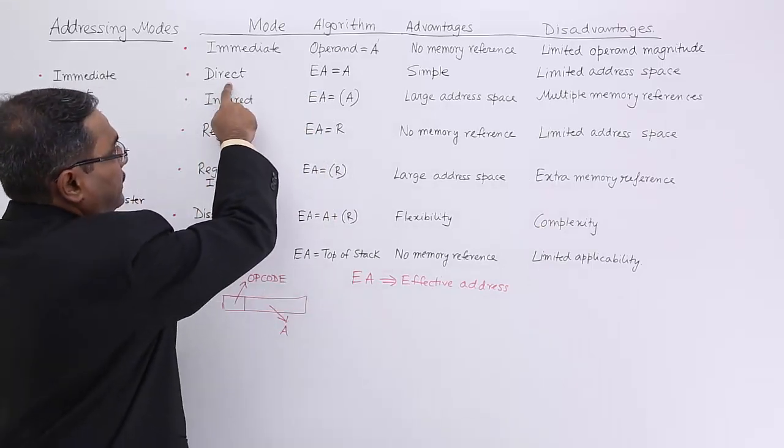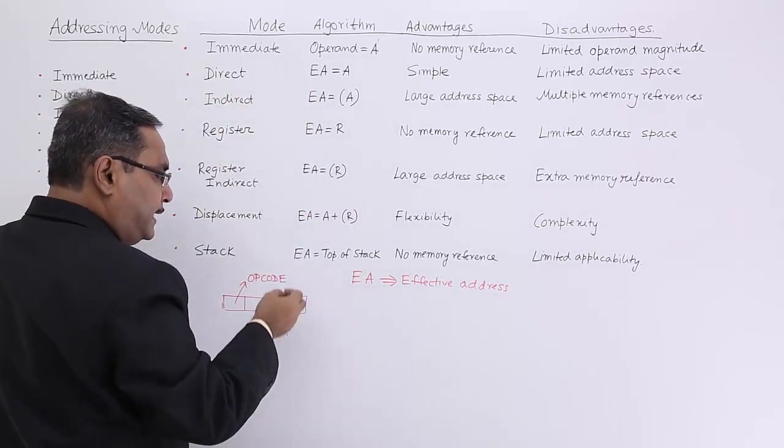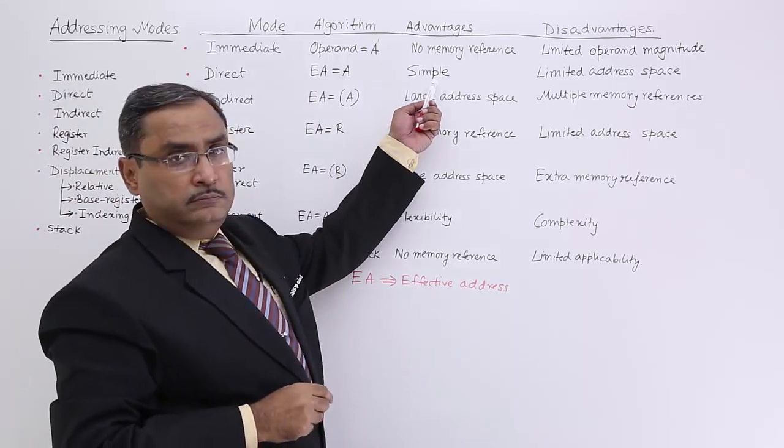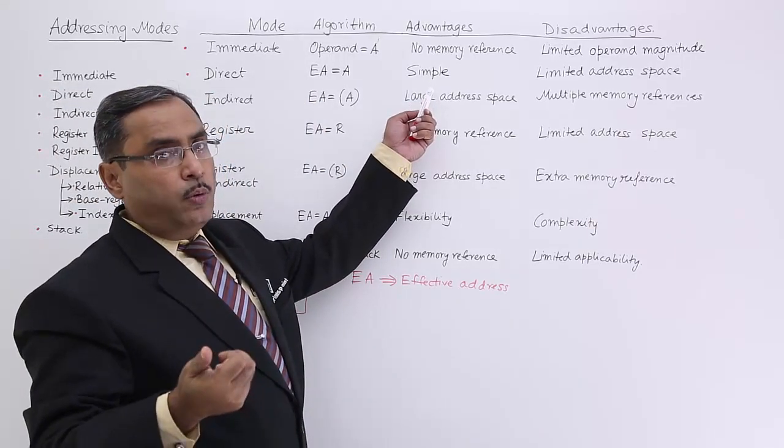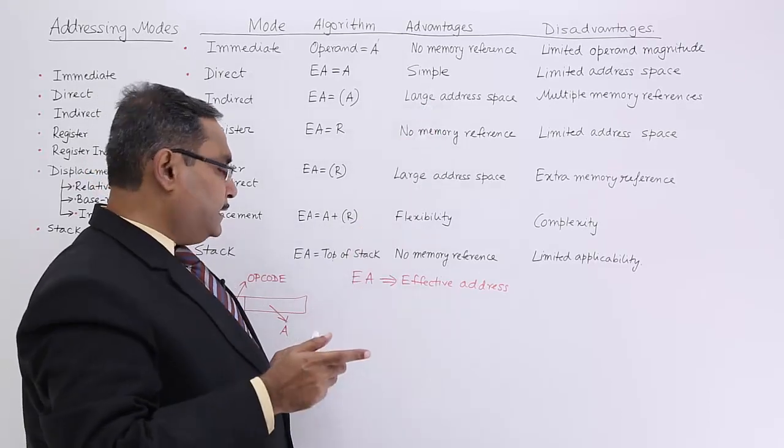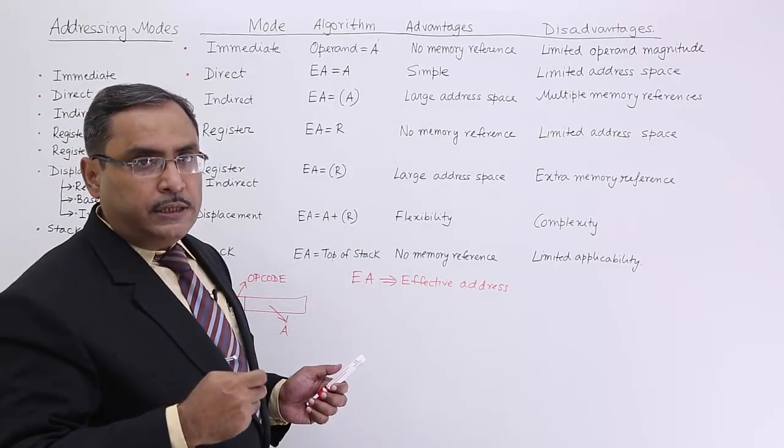Next one, direct. This part itself is containing the effective address. It is very simple. It will require only one memory reference. Go to that memory mentioned by this A and fetch the operand.